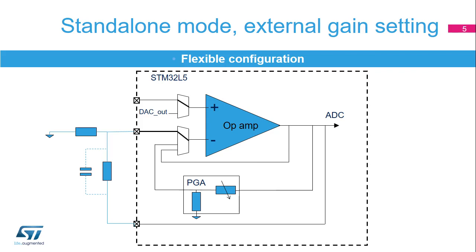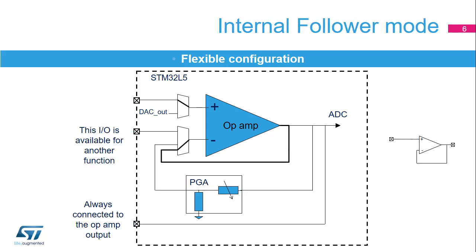The operational amplifiers support a default configuration using the factory-trimmed offset values and operate in normal mode. They can also be configured as an internal voltage follower, where the internal switch connects the output to the inverting input. In internal voltage follower mode, the GPIO pad assigned to the op-amp's inverting input can be freed so that it may be used with a different function, as subsequently assigned in the GPIO selection process.